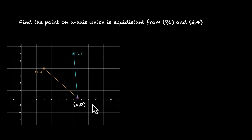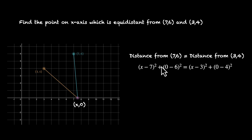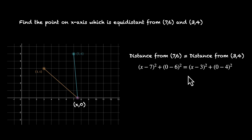We know this point is equidistant from the two given points, so the distance from (7, 6) equals the distance from (3, 4). Because the distances are equal, the squared distances are also equal, so we can get rid of the square root. The distance formula gives us: √((x−7)² + (0−6)²) = √((x−3)² + (0−4)²). Getting rid of the square root, we have this equation. Solving for x will tell us exactly where the point is.